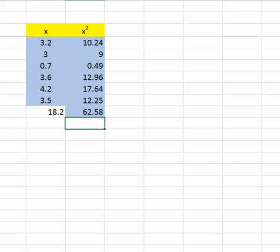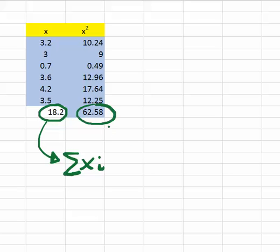And 62.58. So basically, go up here. This number here is the sum of xi, and this number here is the sum of xi squared.